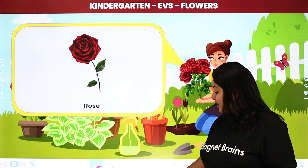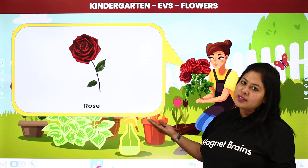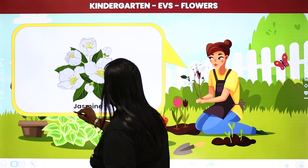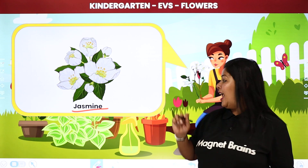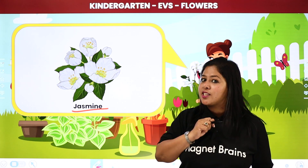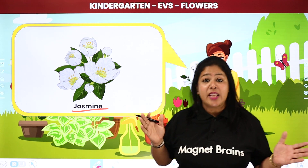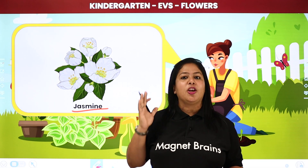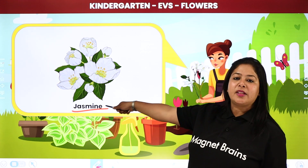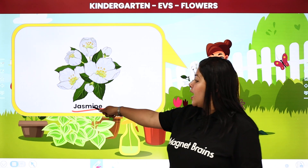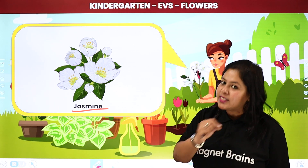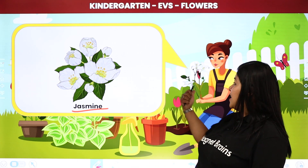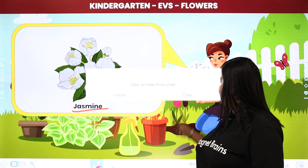Now student, let's see the next flower — ab hame Lisa kaun sa flower dikhayegi? So this is jasmine — J-A-S-M-I-N-E. This is jasmine. Remember: chamele ka ful.